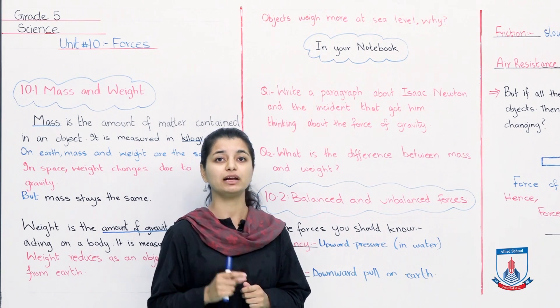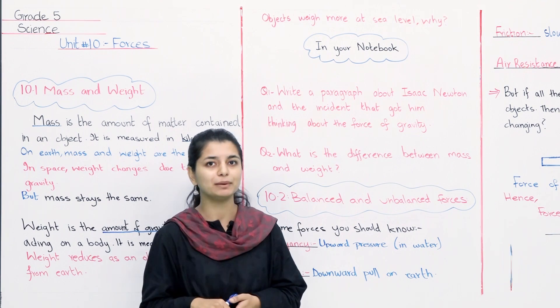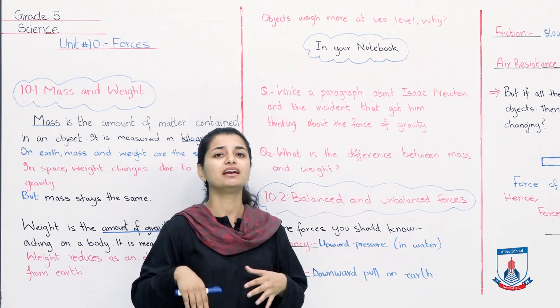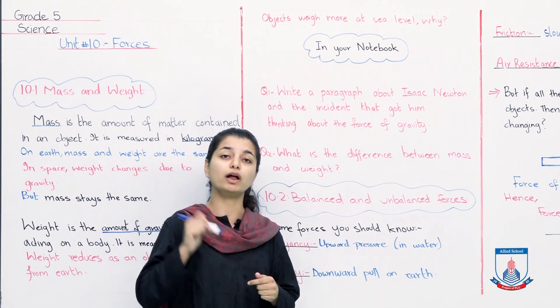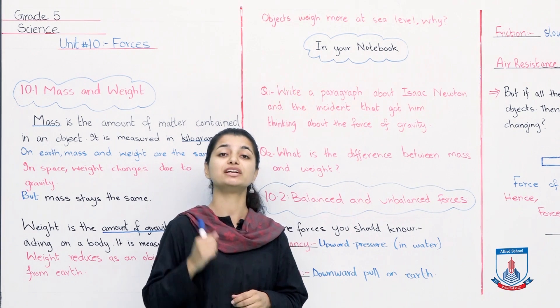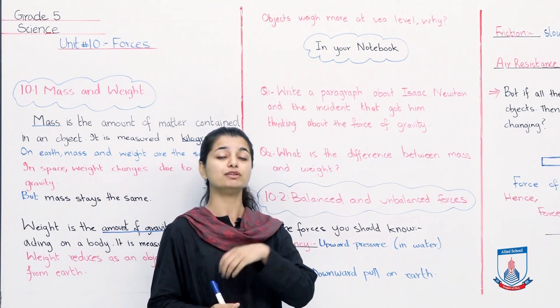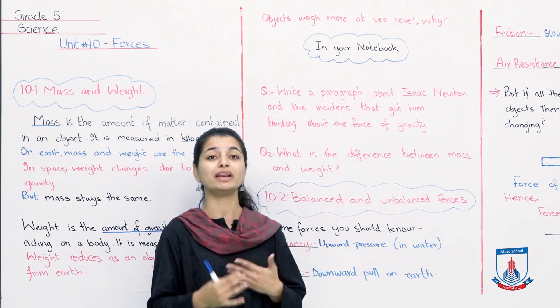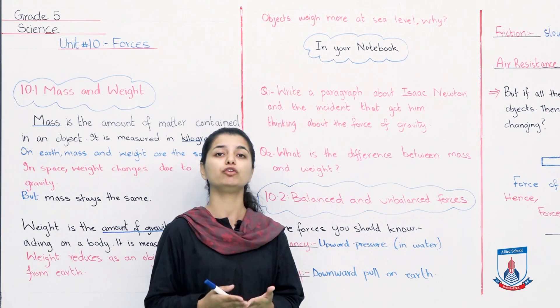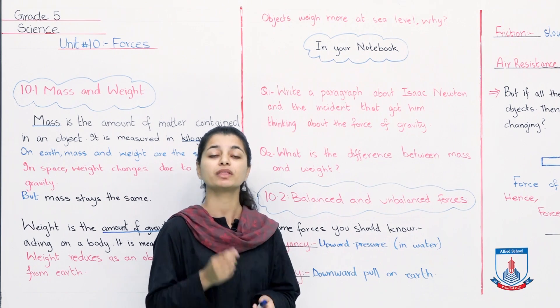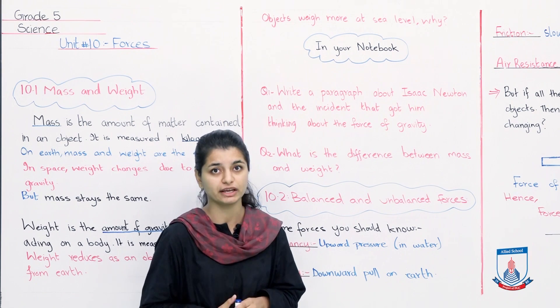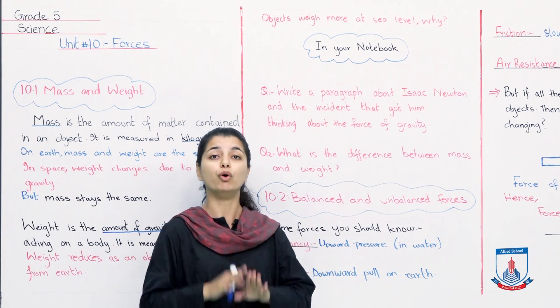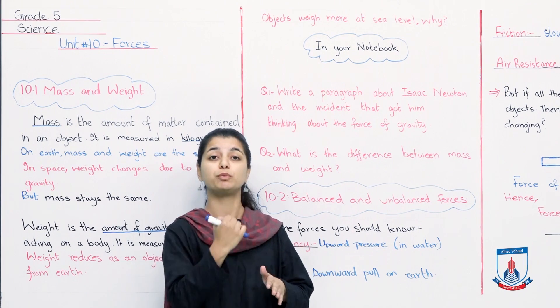So basically what did Isaac Newton do and what inventions or interventions did he make in gravity, because of which we see that now gravity is referred to him, that he was the first person to come up with the concept of gravity. How did he discover it? You have to do a little research on this, but I will also tell you what actually happened. Isaac Newton was a very famous and well-known scientist, and one day he was sitting under a tree, and he noticed that an apple came and fell near him. So Isaac Newton got confused, and he said that this apple, why does it fall downwards toward me?